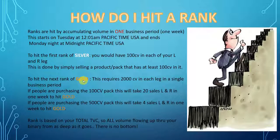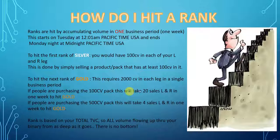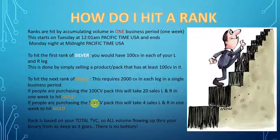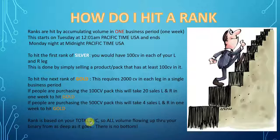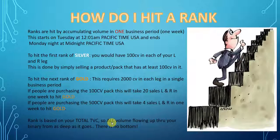If people are purchasing the 100 CV pack, you would have to have 20 sales in each leg to hit gold in one week. If people are purchasing the executive pack that has 500 CV, you would have to make 4 sales in each leg to hit gold. Keep in mind that rank is based on your total team volume commissions — all of the volume flowing up through your binary as deep as it goes to infinity. There is no bottom, so you will see rank coming up literally thousands and tens of thousands of people deep as your business grows.